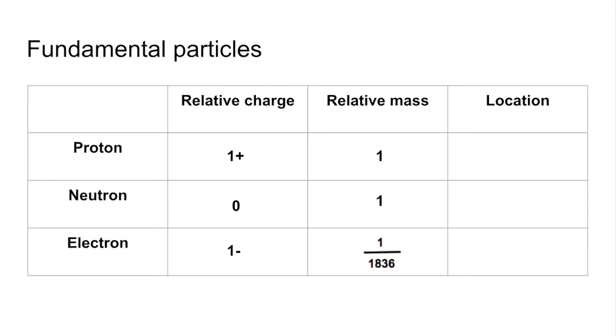You can get away with 1/2000 and you can even get away with saying negligible. Location now: the protons are in the nucleus and so are the neutrons, and the electrons are found in orbitals which are outside the nucleus.